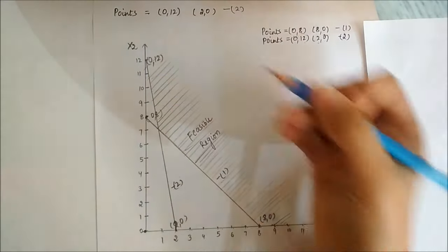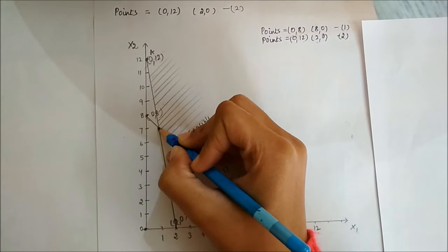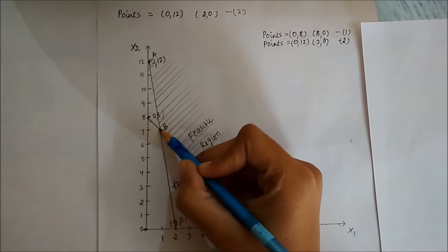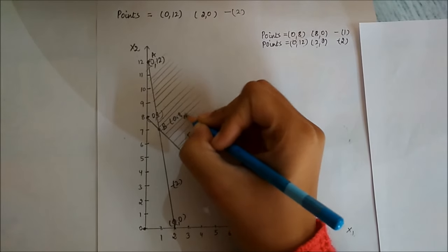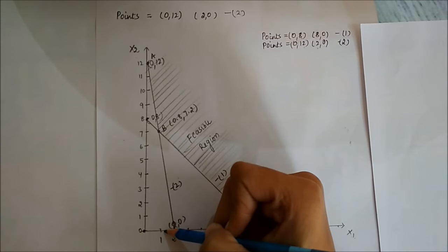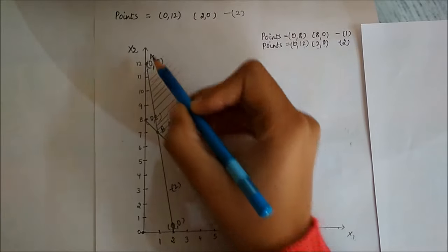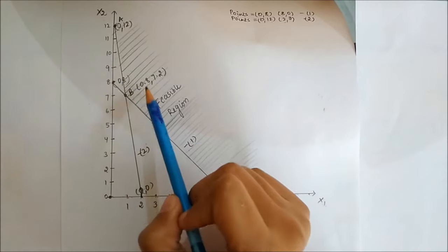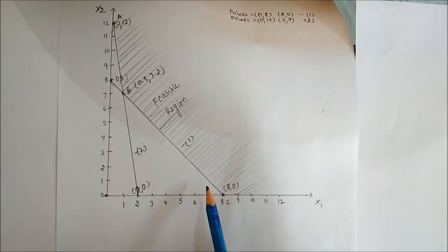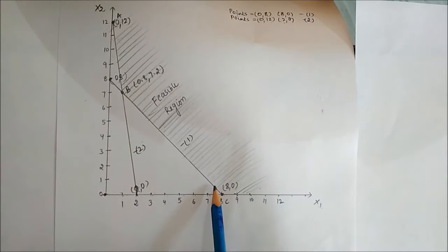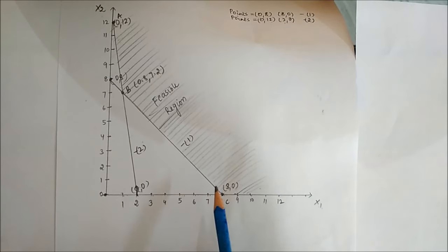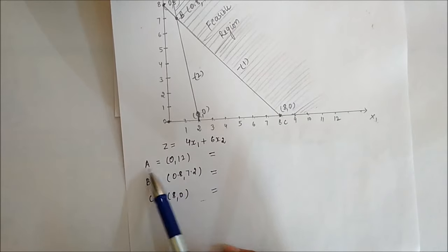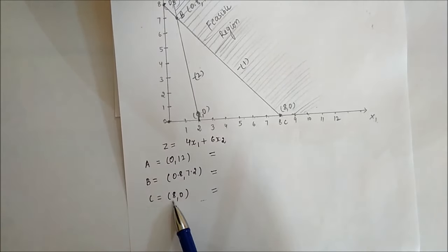Now we need to locate the corner points of the feasible region. We label them a, b, and c. Point a is (0, 12), point b is (0.8, 7.2) — x1 is 0.8 and x2 is 7.2 — and point c is (8, 0). We will take the optimum solution by plotting these points in the objective function.